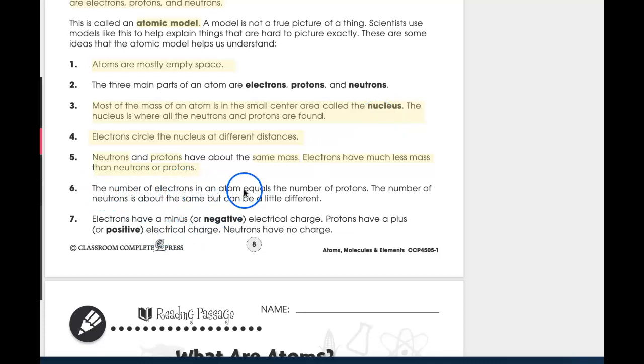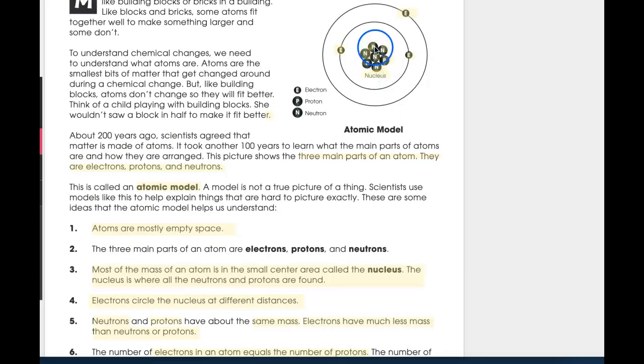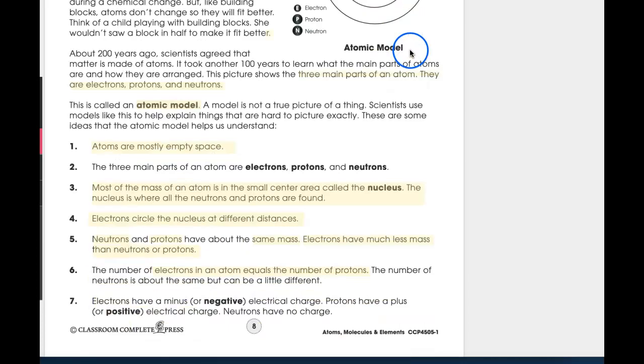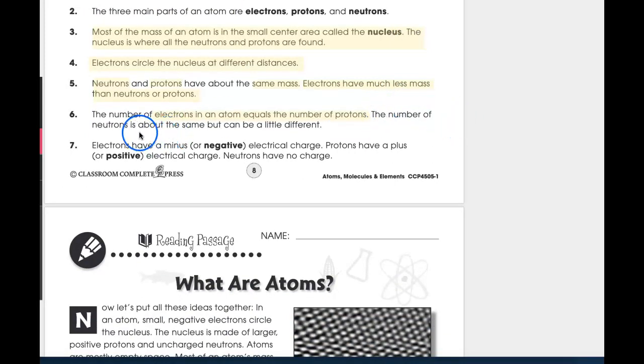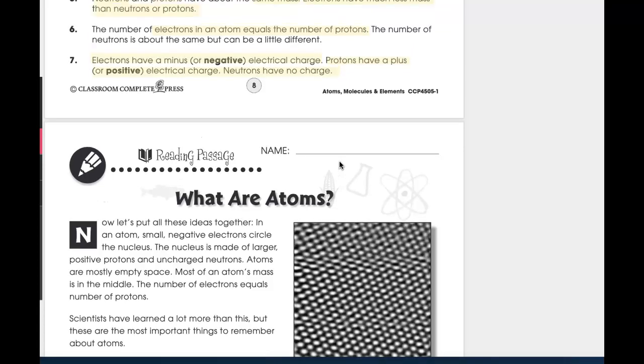Number six, the number of electrons in an atom equals the number of protons. Look at this. I just told you that when we looked at the model up here. Right here. The number of protons, one, two, three, is equal to the number of electrons, one, two, three. If they're not equal, you've got problems. The number of neutrons is about the same, but can be a little different. This is true. Sometimes you'll see that all three parts, neutrons, protons, and electrons, are the same. But sometimes there probably is one more neutron than there is protons. Number seven, you guys have experienced this before. It says electrons have a minus or negative charge, and protons have a plus charge. Go ahead and highlight all of this. And of course, then neutrons have no charge. They are neutral, hanging out by themselves, just watching the action.